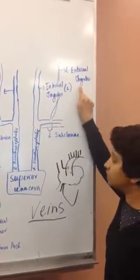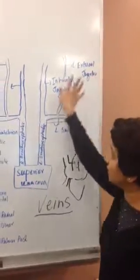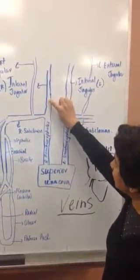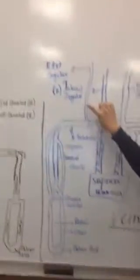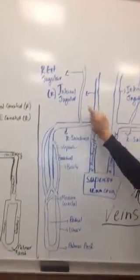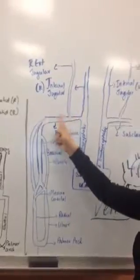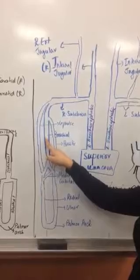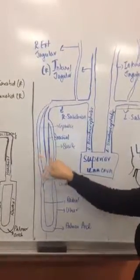The same thing on this side, right? Brachiocephalic—what will this be? Internal jugular. Subclavian, again. Now in your arteries you had brachiocephalic. Yes, you have two more extra guys in your veins.